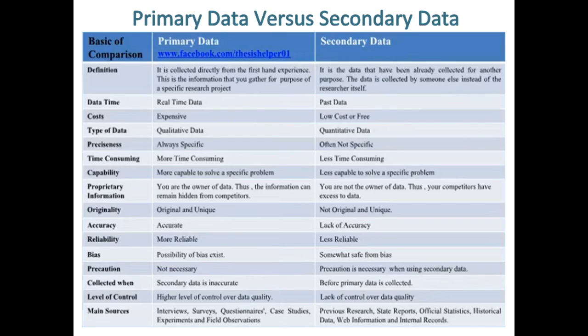Main sources of primary data are interviews, surveys, questionnaires, case studies, experiments, and field observations. While main sources of secondary data are previous research, state reports, official statistics, historical data, web information, and internal records.